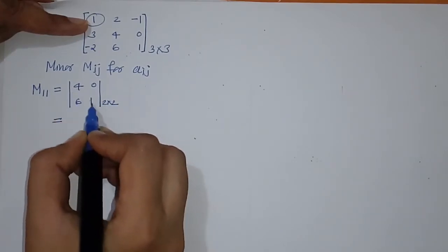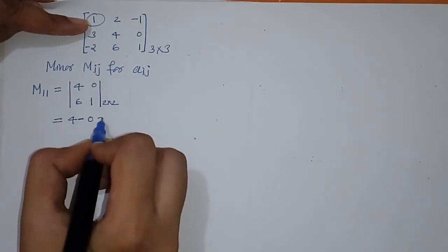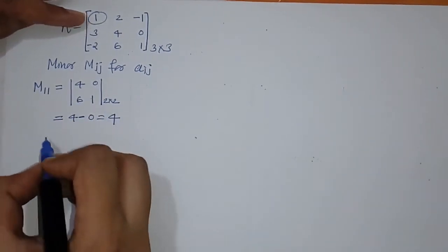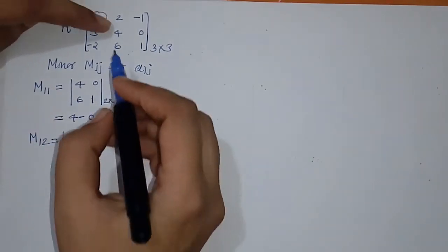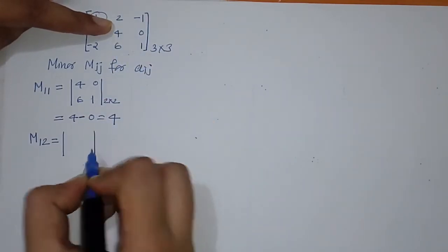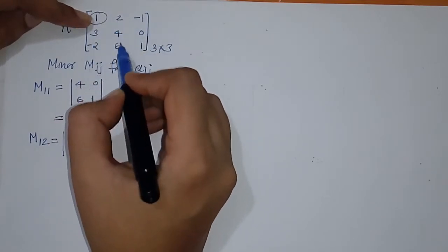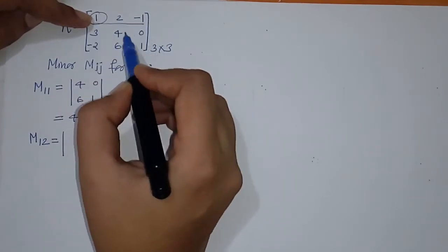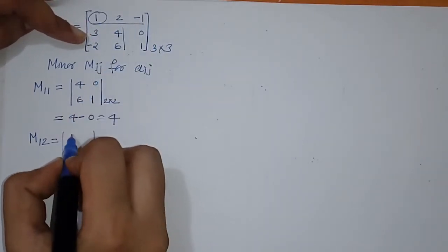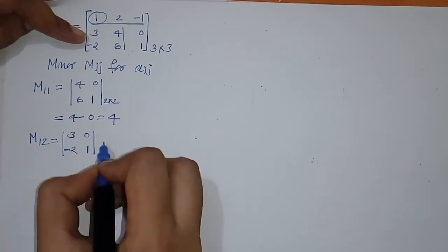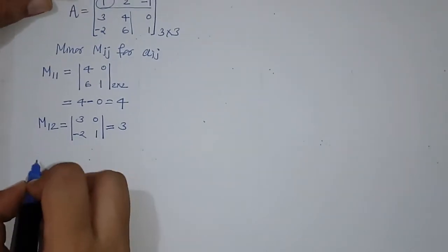This gives a 2×2 determinant. Simplifying M_11: we get 4 minus 0, so M_11 equals 4. Similarly, for M_12, element A_12 lies in row 1 and column 2, so we exclude that row and column and write the remaining elements 3, 0, minus 2, 1. On simplification we get M_12 equals 3.